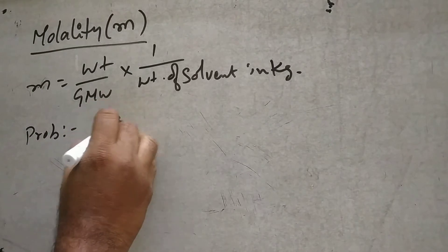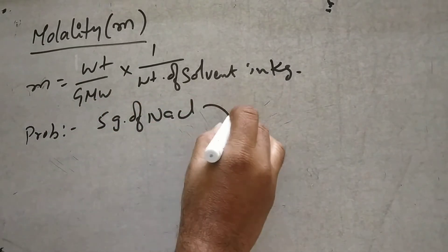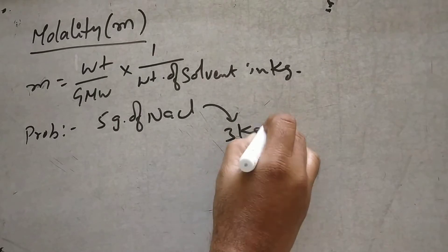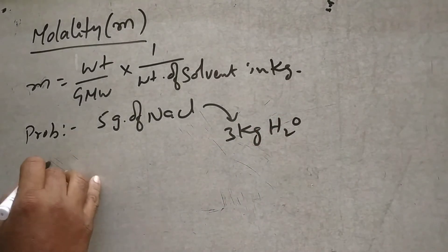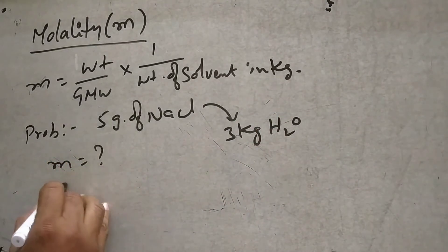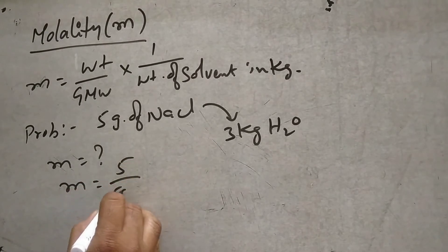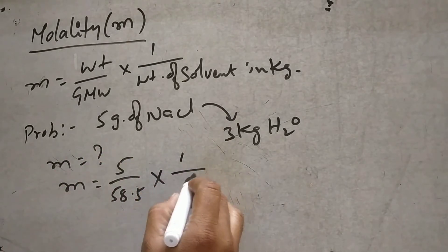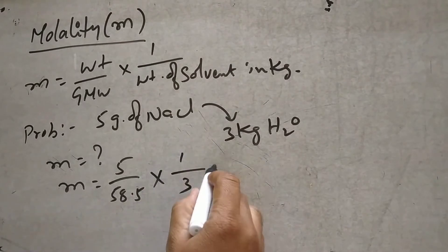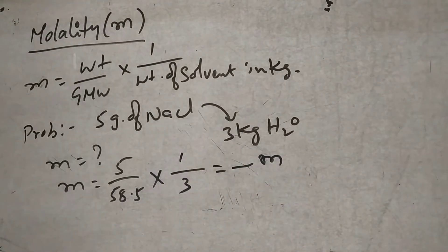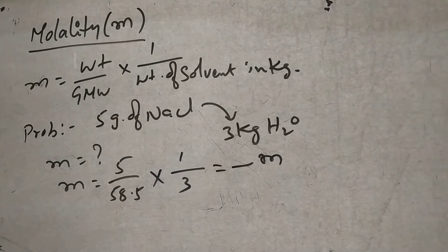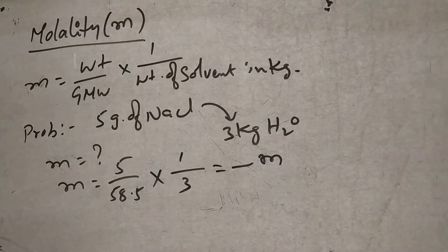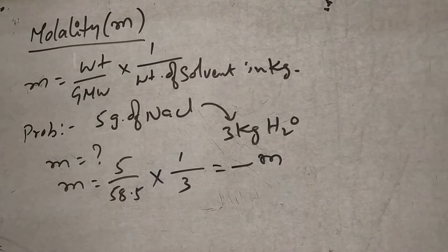Next problem: 5 grams of NaCl is dissolved in 3 kg of water. Molality equals 5 divided by 58.5, into 1 divided by 3 kg. So you will get small m equals 5 divided by 58.5 into 1 by 3. Concept is clear.